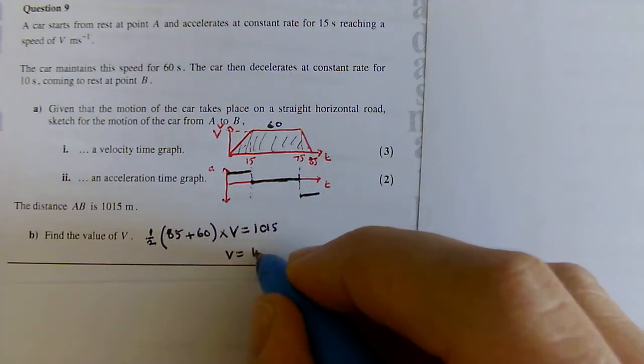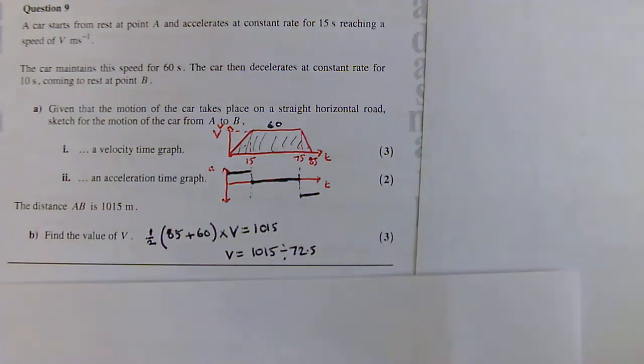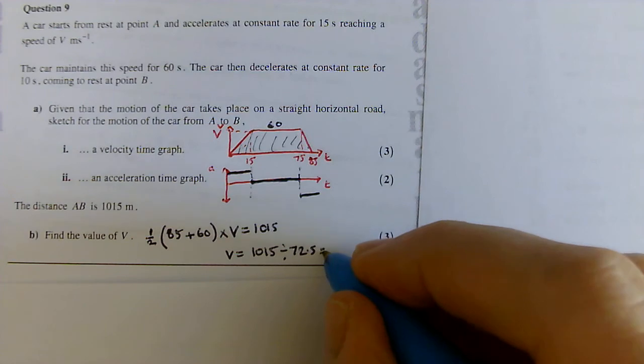So, V equals 1015 divided by 72.5, which gives you an answer of 14 metres per second.